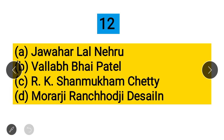Question 12: The first union budget of independent India was presented by? Option A: Jawaharlal Nehru, Option B: Vallabhbhai Patel, Option C: RK Shanmugam Chetty, Option D: Morarji Ranchhodas Desai. The correct answer is RK Shanmugam Chetty, who presented the first union budget of independent India.